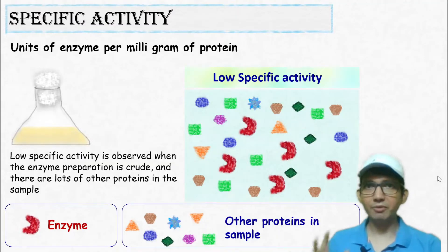Recall the definition of specific activity. It's the units of enzyme per milligram of protein. So in this case, since the other unwanted proteins will also contribute to the final weight, the units of enzyme present per milligram of protein will be less.